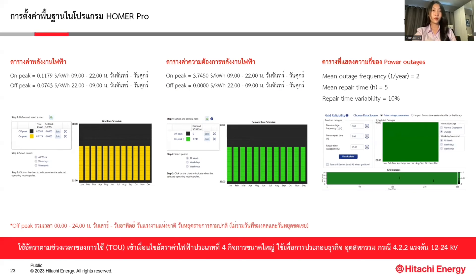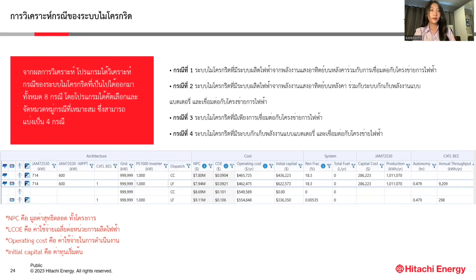The next step involves setting the program's fundamentals, beginning with configuring the time-of-use (TOU) rate. It falls under the category of large-scale commercial electricity used for industrial purposes, with a demand range of 12 to 24 kW. Additionally, the frequency of power outages is set at 2 occurrences per year under the worst-case scenario. With HOMER Pro, system recovery after an outage is estimated at 5 hours with a margin of error of 10%. After analyzing the program, four possible scenarios are considered.